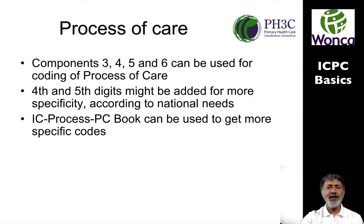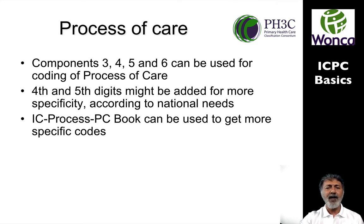The third element is process of care — that's components three, four, five, and six, which are lumped here as the process of care component. Often you may add a fourth and fifth digit to give more specificity. You can use the ICPC process PC book to get more specific codes, as the set in the two-pager tends to be a little narrow.